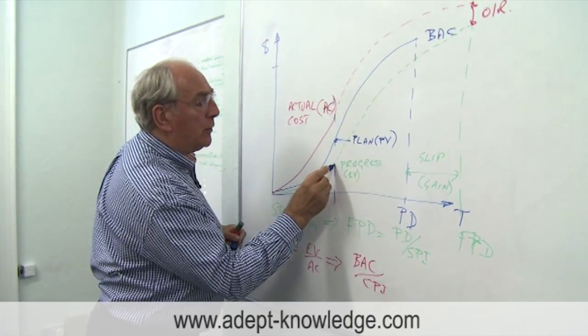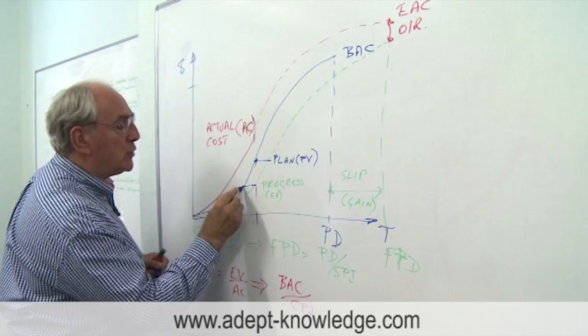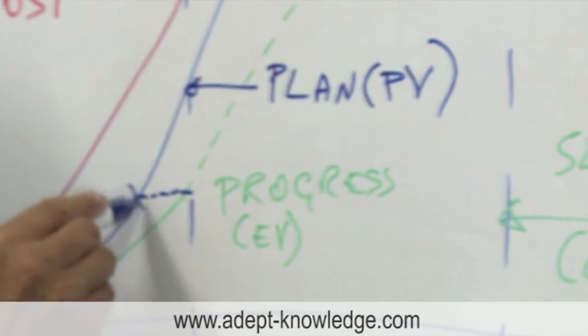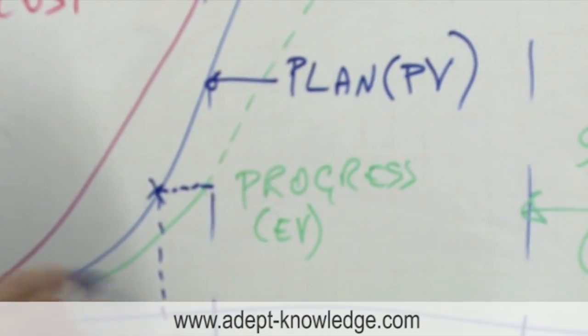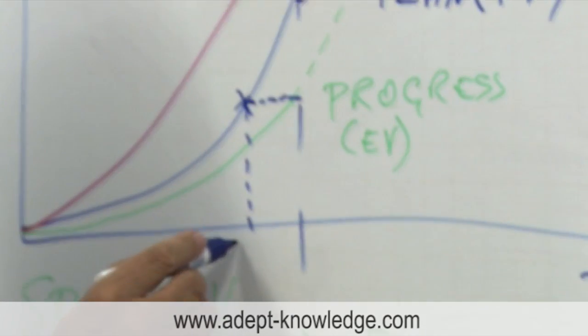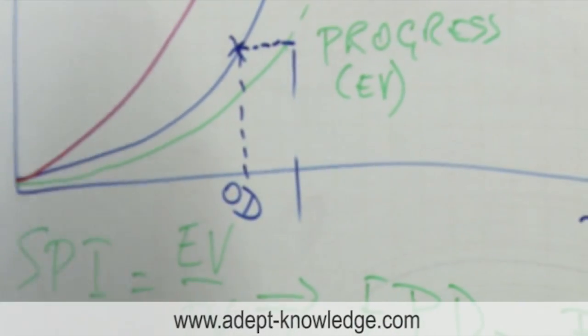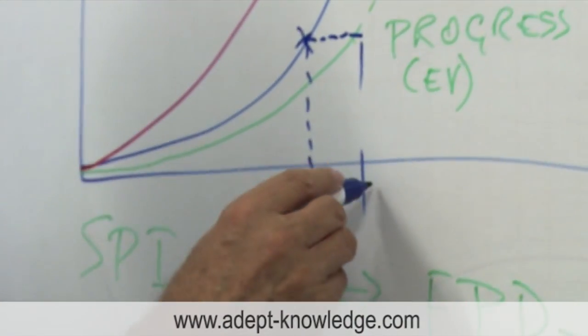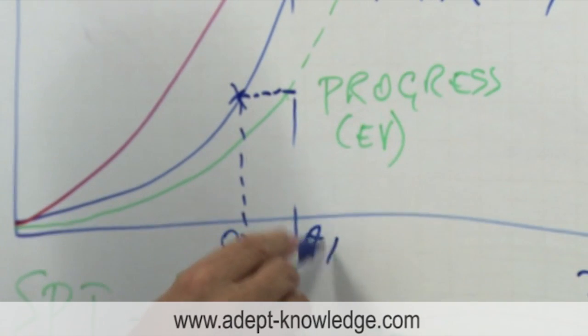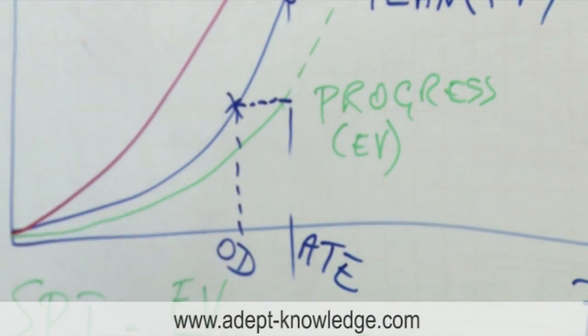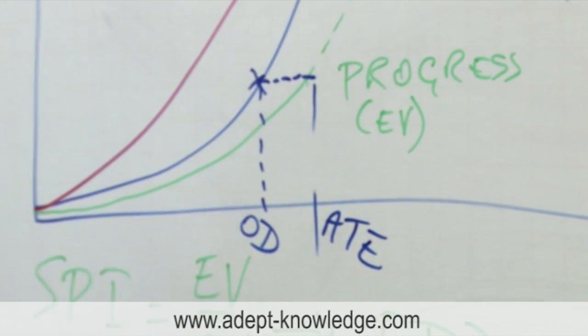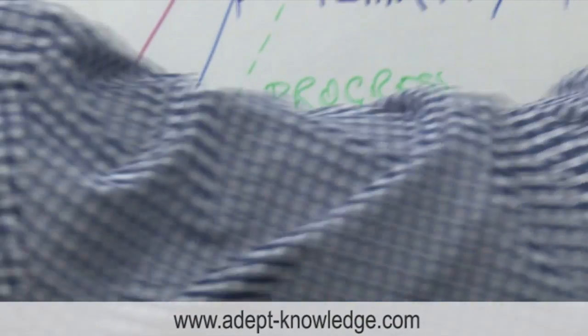We drop that down onto the timeline. It's called OD, the original duration, and our time is known as the actual time expended, ATE. So we have a really good measure now of a new kind of schedule performance index.